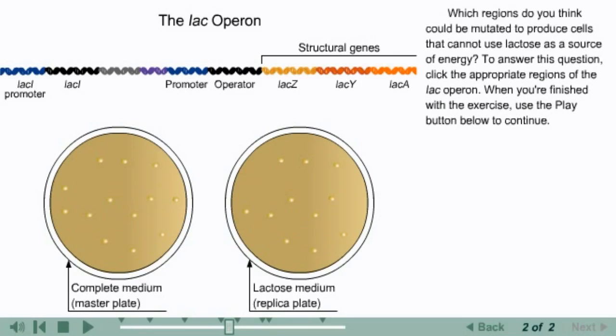Which regions do you think could be mutated to produce cells that cannot use lactose as a source of energy? To answer this question, click the appropriate regions of the lac operon.